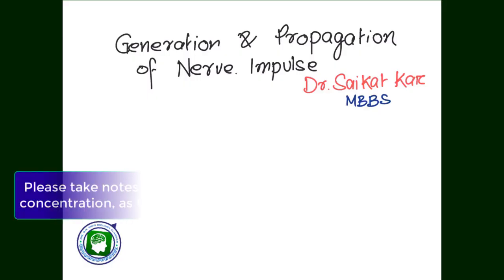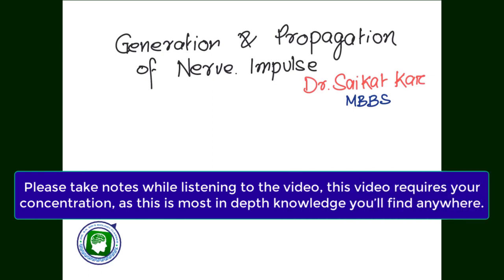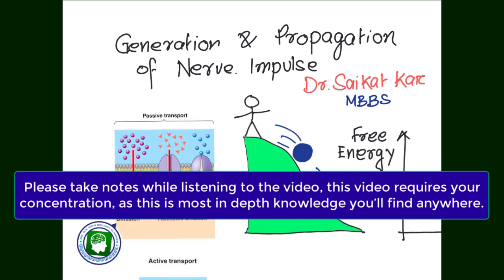Hello students. This is Part 5 of our nervous system lecture series. Here we will try to understand the process of generation and propagation of nerve impulse. This video will be a little bit longer compared to other videos of the series, as we will go from very basic to a lot of details here.